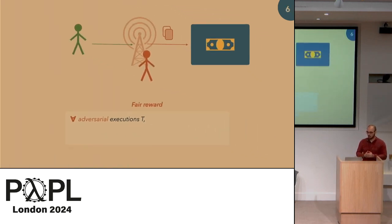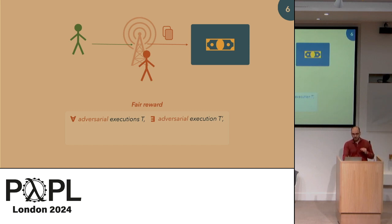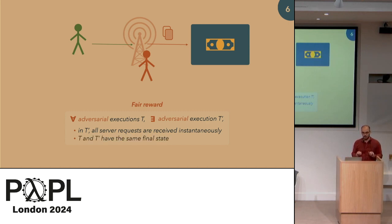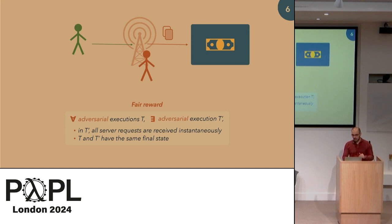What we want is: for all possible executions of the system, there exists another execution t-prime that verifies two properties. First, the second execution should be ideal — it should be impossible to mount an attack in it, so whenever someone emits a request, it is immediately treated by the server and answered. Second, the two traces should have the same final state. This is a simulation statement: for all adversarial executions, the final state should match a trace where nothing bad could happen. If the above attack is possible, this security property would be violated.